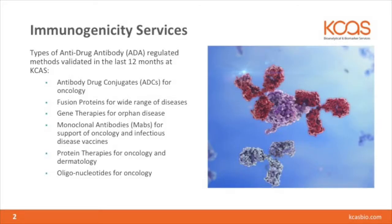The types of services that we provide for support of anti-drug antibodies vary across a wide range of drugs as well as a wide range of disease states. They include such things as antibody-drug conjugates or ADCs, fusion proteins — which can be somewhat tricky given the nature of multiple sources of proteins being put together — gene therapies, which is again a somewhat tricky area in that frequently it's not the actual therapeutic itself but the target that the therapy is trying to augment that you start to look for antibodies against. Also, a wide range of monoclonal antibodies, protein therapeutics, and oligonucleotides, which is again a very tricky area given the innate nature of oligonucleotides.